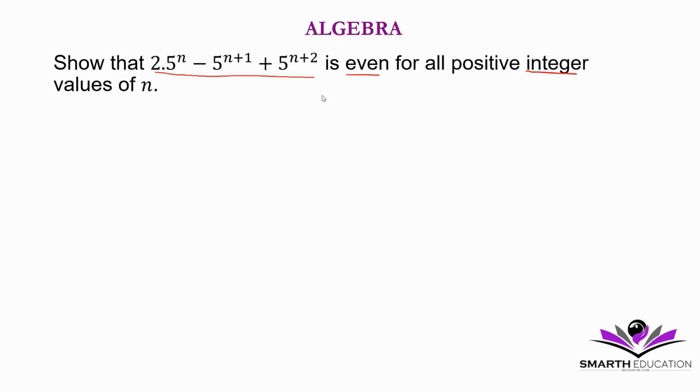You have to know that if you multiply any integer with an even number, the answer is even. So we have to simplify this expression and see if the coefficient is going to be an even number or not.